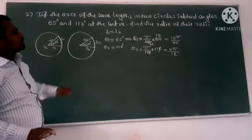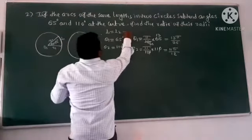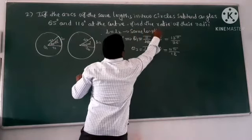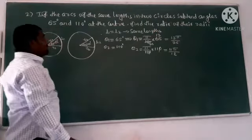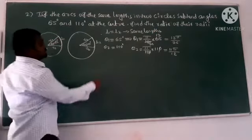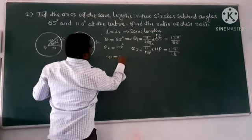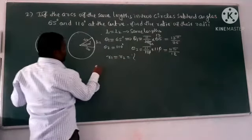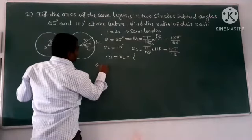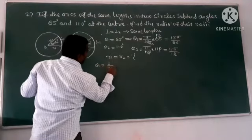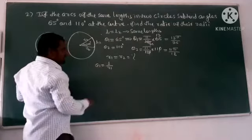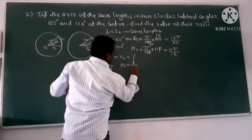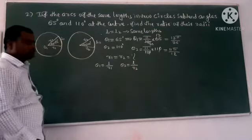Now theta 1, theta 2, same length of the arc. Same length. Here it is equal to L2. What are they asking in the question? Radius R1 and R2. They are asking the question. So what is the formula? The formula: theta 1 is equal to L by R1. Theta 2 is equal to L by R2.